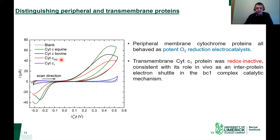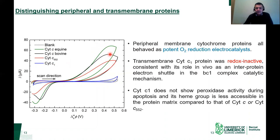When we tested the transmembrane protein cytochrome C1, we found it was redox inactive. This is consistent with its role in vivo as an interprotein electron shuttle in the BC1 complex catalytic mechanism. The CV in the presence of cytochrome C1 shows no electron transfer process, because it does not show peroxidase activity during apoptosis in vivo and its heme group is less accessible in the protein matrix. Our electrochemical cell can clearly distinguish between peripheral and transmembrane proteins.